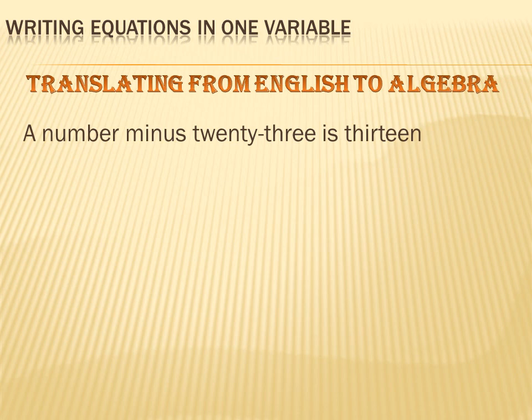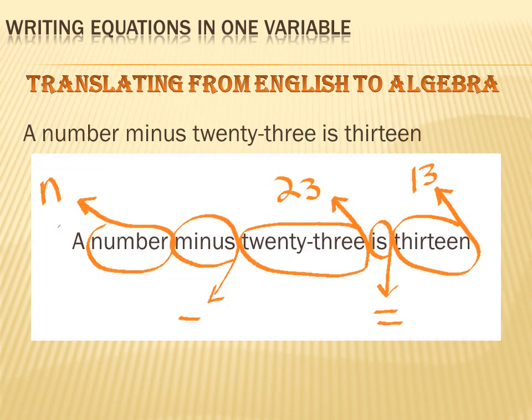Let's say we had the sentence: 'a number minus 23 is 13.' Could you translate that into algebra? First of all, the word 'number' is what we're trying to find — that's the variable, what we don't know. We're going to solve for a number. Let's call that number n, so we translate 'number' into n. Next, we translate the minus sign — that's just a minus sign. Then 23 translates directly to the number 23.